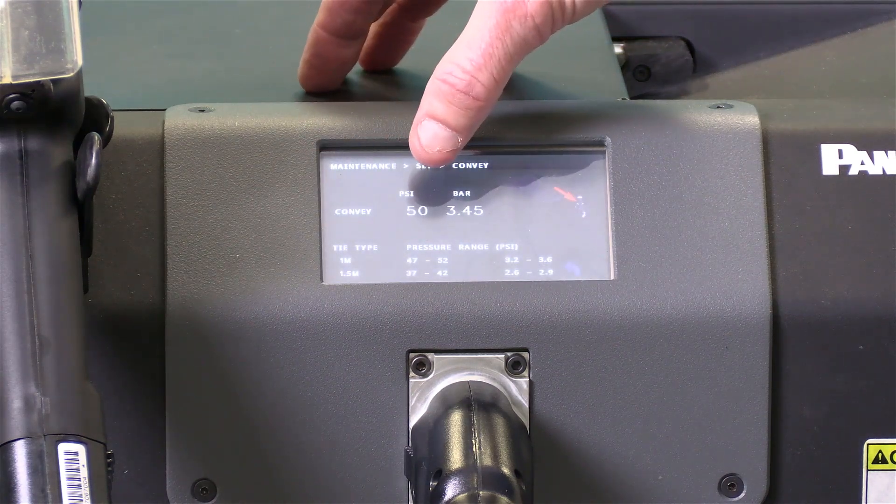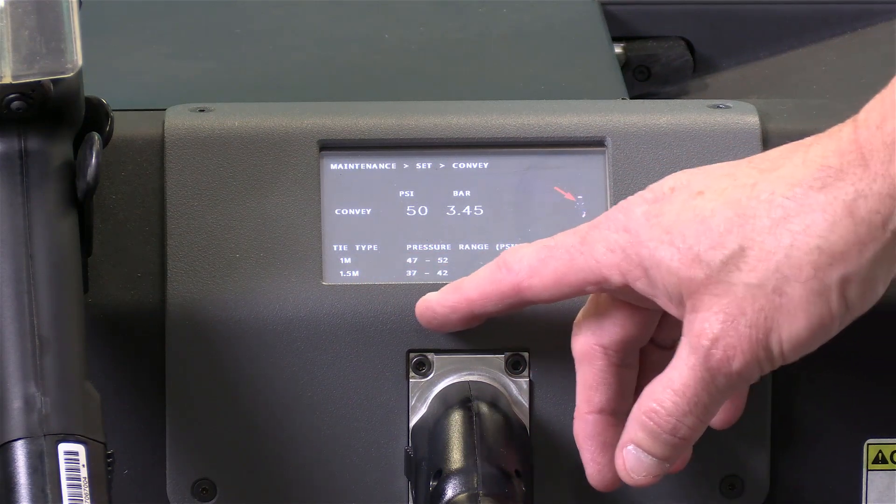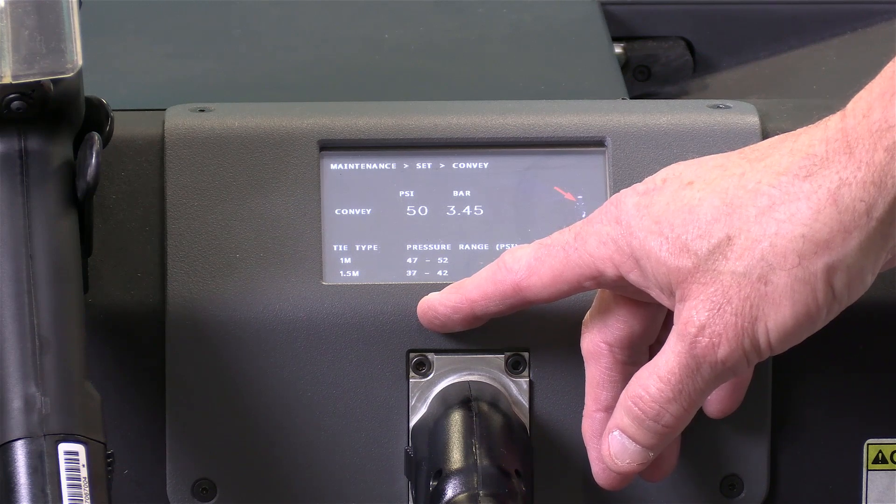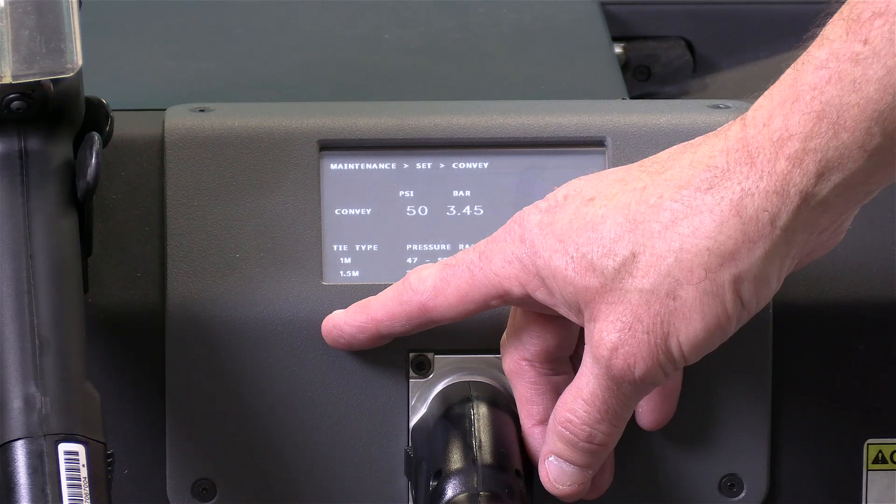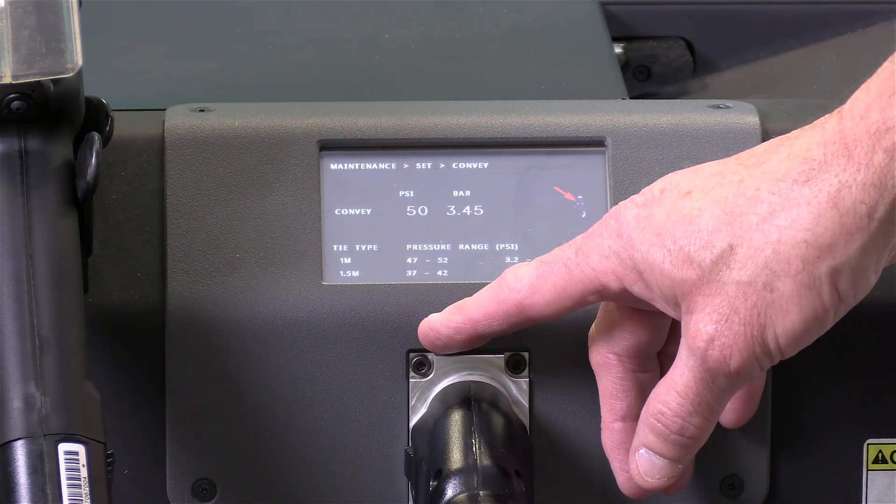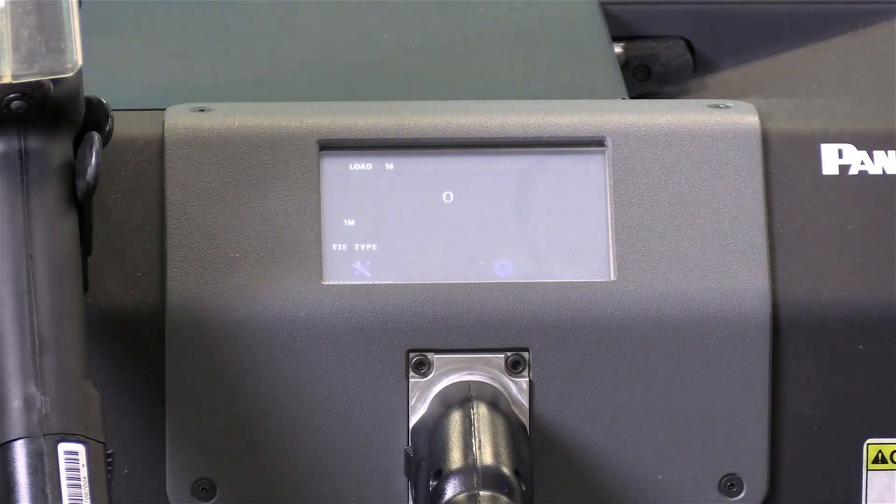The convey here is set at 50, which is what is recommended for a 1M cable tie and we'll be using PLT 1M-XMR cable ties for the rest of this video. We also provide PLT 1.5M-XMR cable ties and the convey should be set between 37 and 42 if you're using those. Then just press the back button to get out of that screen.